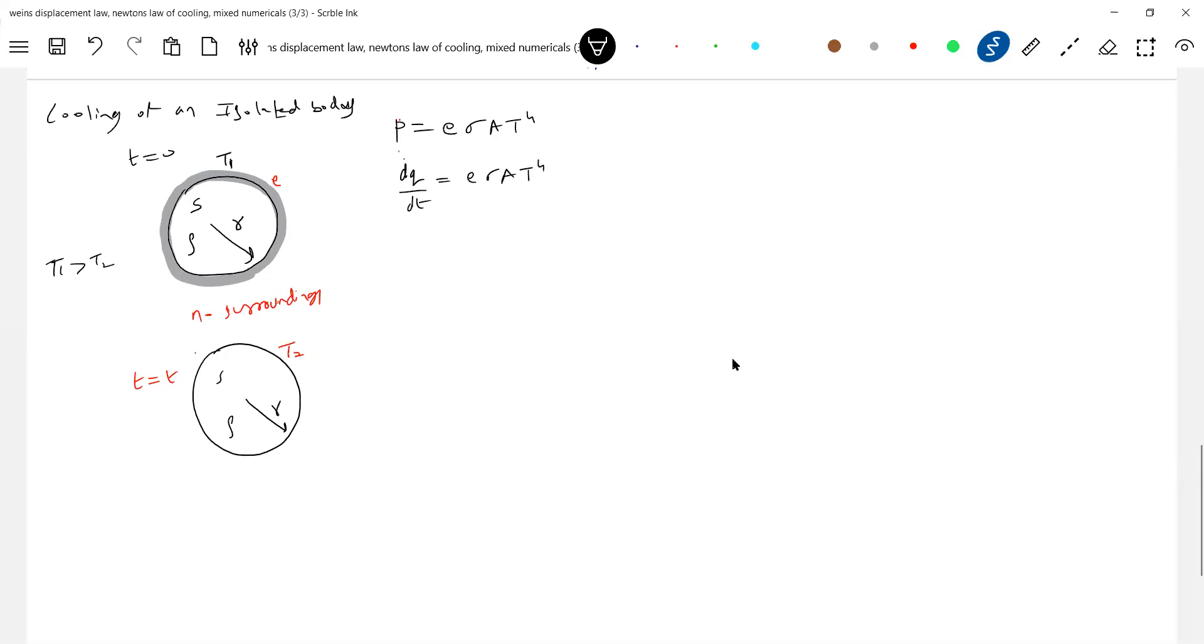It will give out energy. Then what is the dQ? As it gives out, can we write minus ms dt? Go back to calorimetry. If your body loses heat, we write minus ms dt. If your body gains heat, plus ms dt. Please remember.